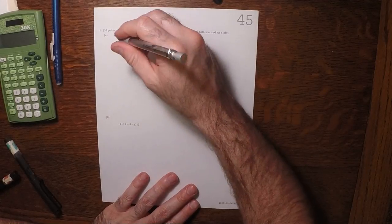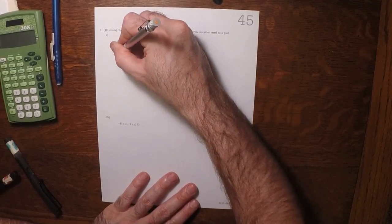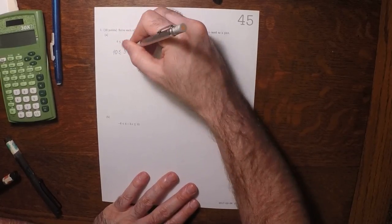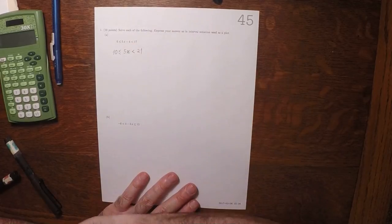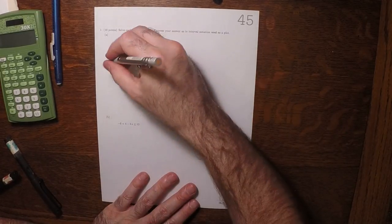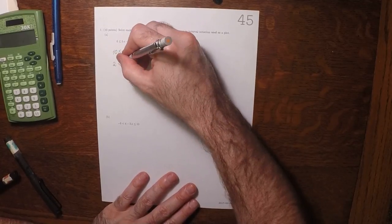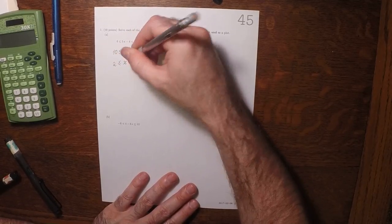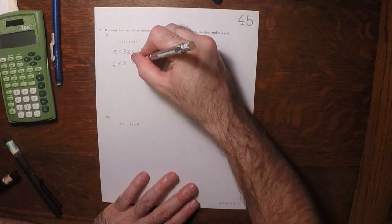Okay, so then we'll add 4 everywhere. So that will be 10 less or equal 5x less than 21. Divide by 5. So 2 less or equal x less than 21 over 5, but that's 4.2.